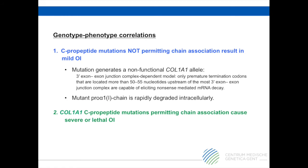A second group are pathogenic COL1A1 variants that result in the production of stable mutant proα chains that can be incorporated into type 1 procollagen heterotrimers, thereby delaying their folding. Intracellular accumulation of these misfolded chains has been shown to activate the unfolded protein response and increase endoplasmic reticulum stress. These defects generally cause the most severe OI phenotypes.